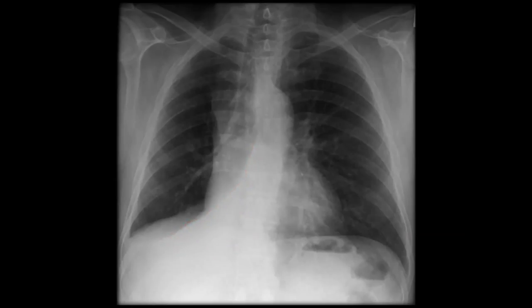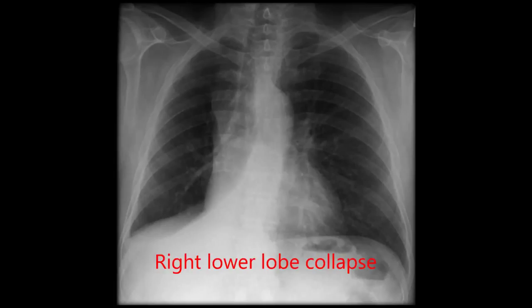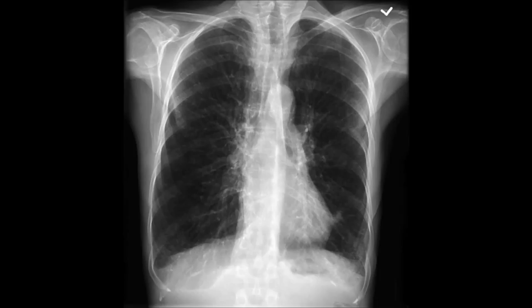Putting all this information together, the silhouette sign at the right hemidiaphragm suggests a right lower lobe problem. The asymmetry of the lungs, and right-sided deviation of the trachea and mediastinal structures, suggests a reduction in right lung volume. Add to this the area of opacification with absent lung markings, and you have a classic picture of a right lower lobe collapse.